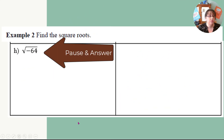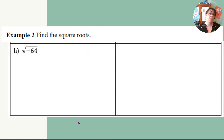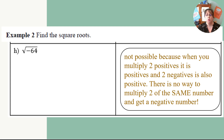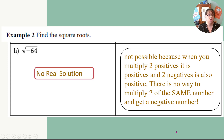Try the square root of negative 64 — pause and work on it. Hopefully you came up with no real solution. Why? Because it's a negative number under the square root. You can't multiply any two of the same number and come up with a negative. If you wrote 'no real solution,' give yourself a pat on the back — that's the most important takeaway from today.